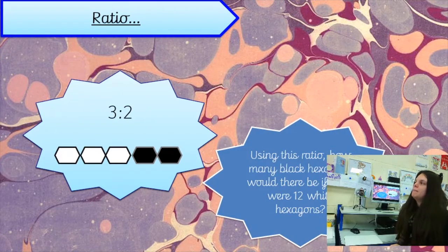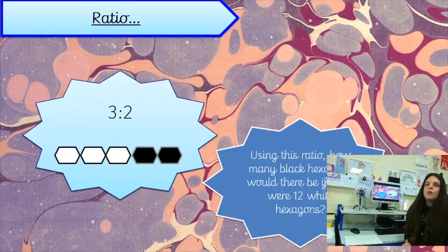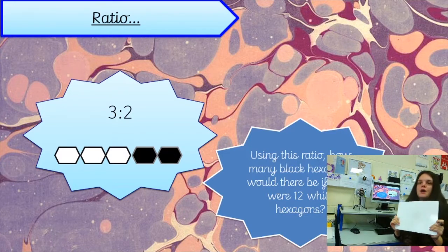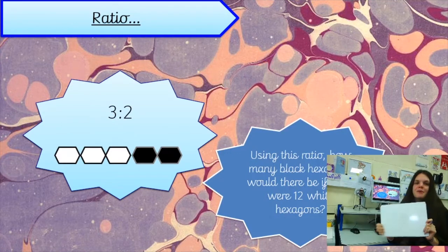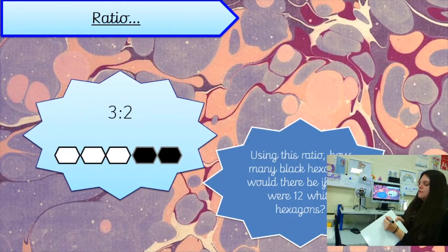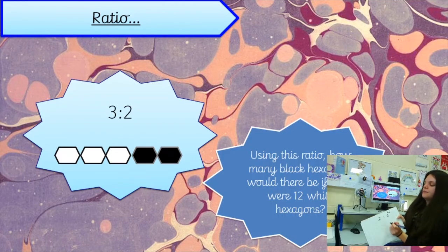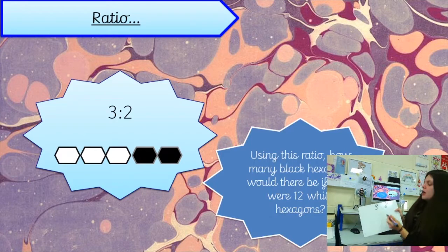Using this ratio, how many black hexagons would there be if there were 12 white hexagons? I'm going to use my whiteboard, and people in the class are too. At home, with your scrap bit of paper, just jot down the ratio — so we've got three to two. The three symbolizes the white hexagons and the two symbolizes the black hexagons.